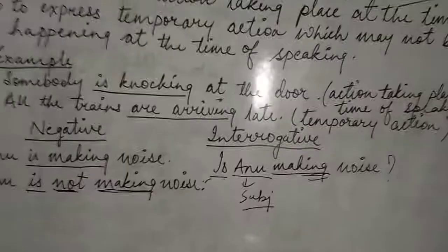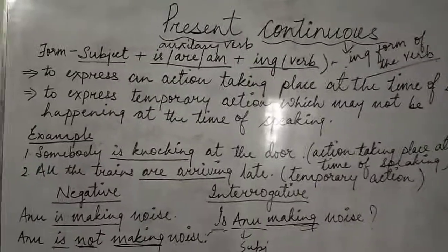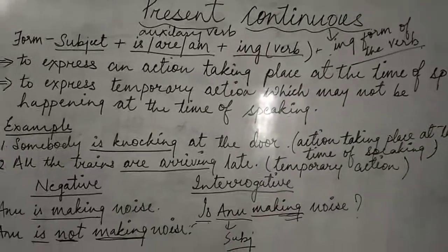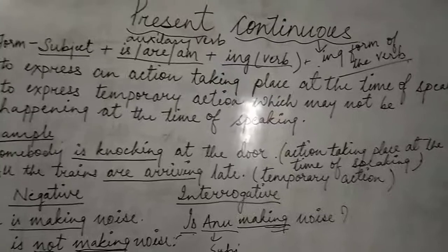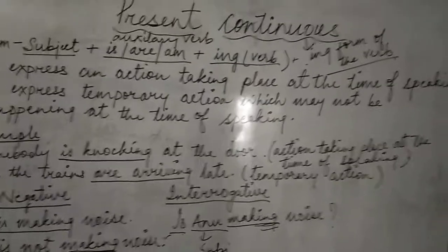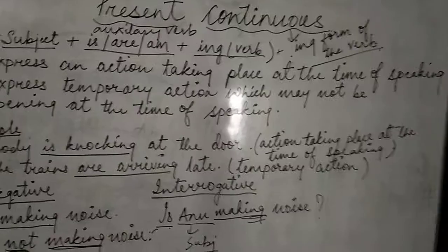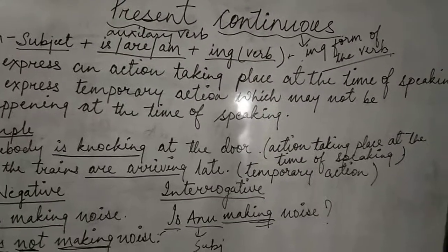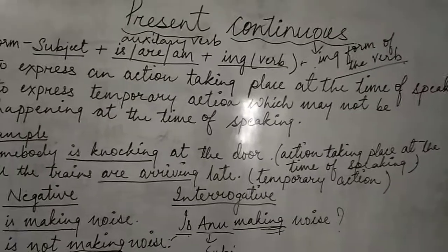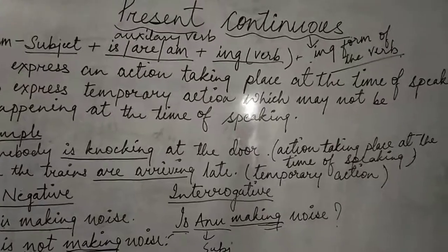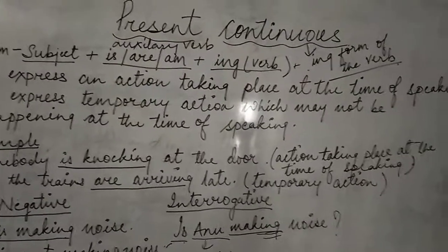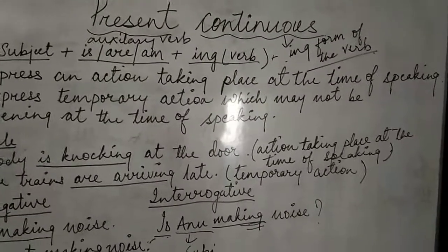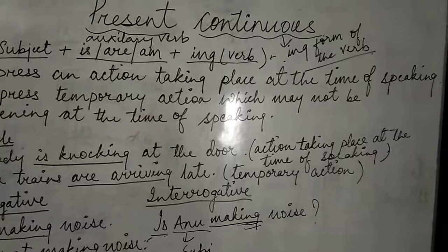So that is all for today. You have understood what the continuous form is — it means the action taking place at the time of speaking. Always remember: the continuous form means the ing form of the verb, and in present continuous you add is/am/are as an auxiliary verb followed by the ing form of the main verb. In the next class I'll be doing the other exercises.